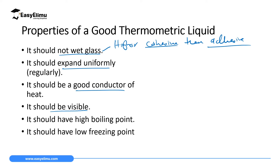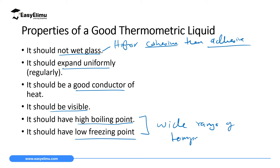Another property is that it should have a high boiling point, so that it does not change to a gaseous state before measuring the required temperature. It should also have a low freezing point so that it does not change to a solid before measuring the temperature we want. In short, a good thermometric liquid should have a wide range of temperature — meaning a high boiling point and a low freezing point.